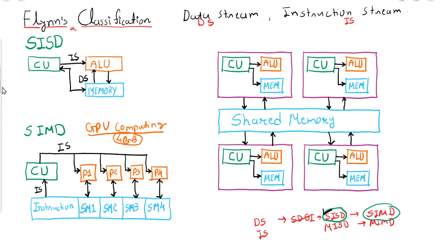Next is MISD — Multiple Instruction Stream Single Data Stream. There is not a single processor or computer that exists commercially which can be categorized into this category. MISD is only a theoretical concept; no commercial product falls under MISD.